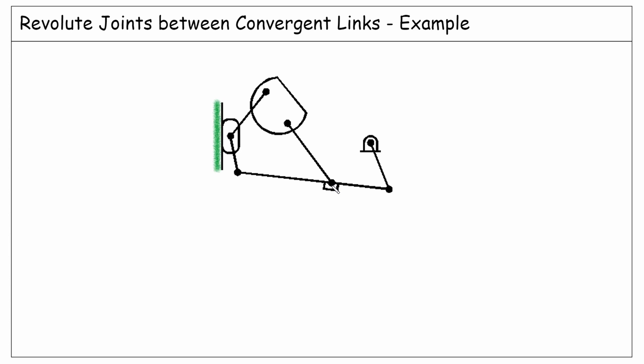So we count this as only one revolute joint. The number of bodies is one, two, three, four, five, six, and seven. The number of revolute joints: here between these two links and the slider we count two revolute joints. Other than that we have one, two, three, four, five, six.